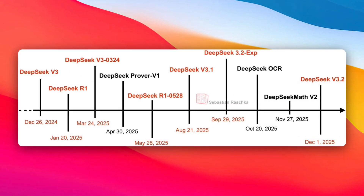Before talking about version 4, it's important to understand DeepSeek's pattern — because they don't release models randomly. They've been very deliberate. It really starts with DeepSeek version 2. Version 2 didn't shock people by beating GPT-4. What surprised everyone was efficiency. The version 2 model came with something called MLA, multi-head latent attention, which showed that you could get strong reasoning performance without brute-forcing scale. That was the first sign DeepSeek cared less about headlines and more about how models actually work.